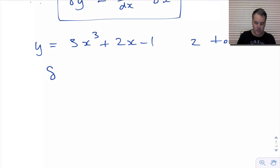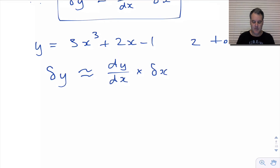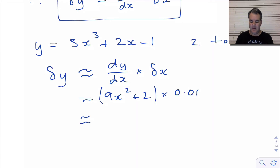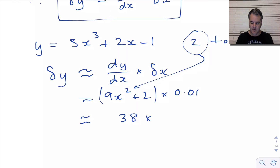So we want to know what's the approximate change in y given this change. We know the approximate change in y is dy/dx times the small change in x. Here dy/dx is 9x² + 2 and the change in x is 0.01. We know the x value there is 2, so we substitute it in: 9 times 2 squared is 9 times 4, which is 36, plus 2 is 38, times 0.01.